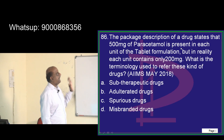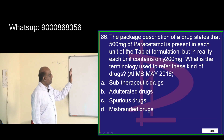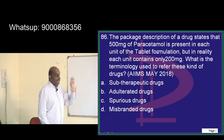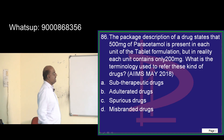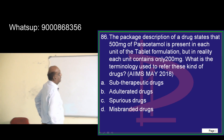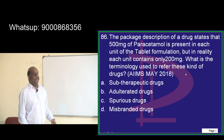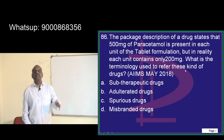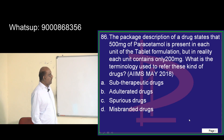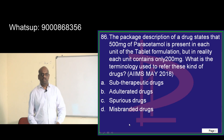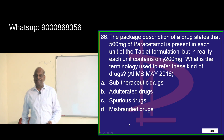The package description of a drug states 500 mg of paracetamol is present, but in reality the packet contains only 200 mg. The terminology used for this is called adulteration.